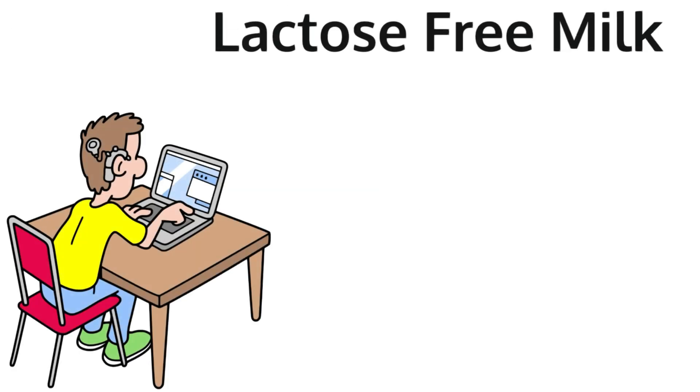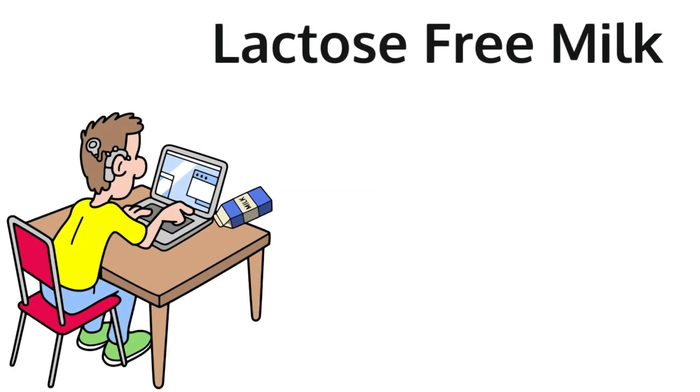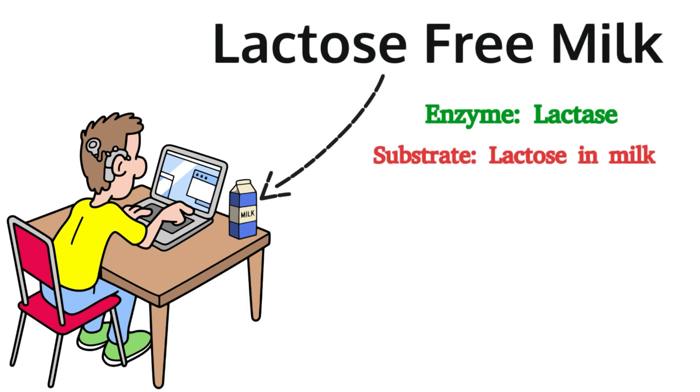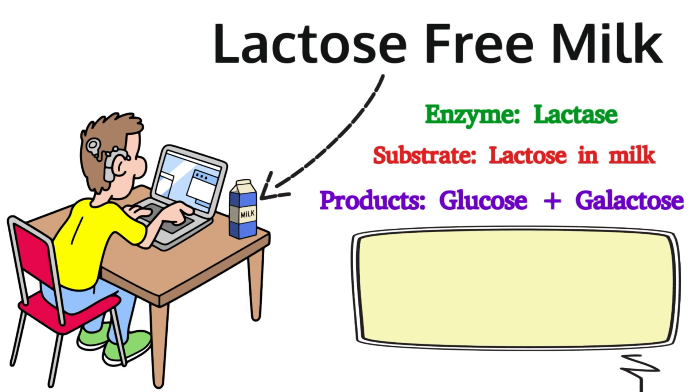What about lactose-free milk production? Lactose is a disaccharide that many people cannot tolerate. The enzyme lactase is added to milk and acts on the lactose, breaking it down into glucose and galactose. So lactose, a disaccharide, gets split into two monosaccharides.